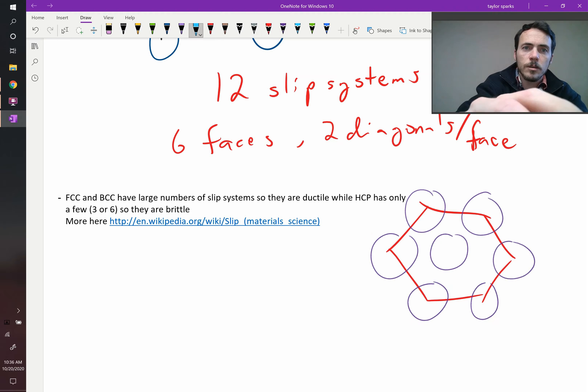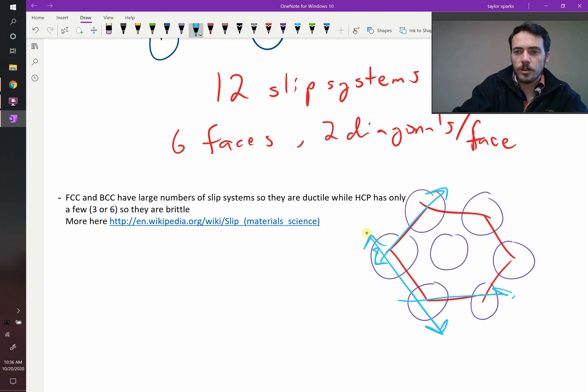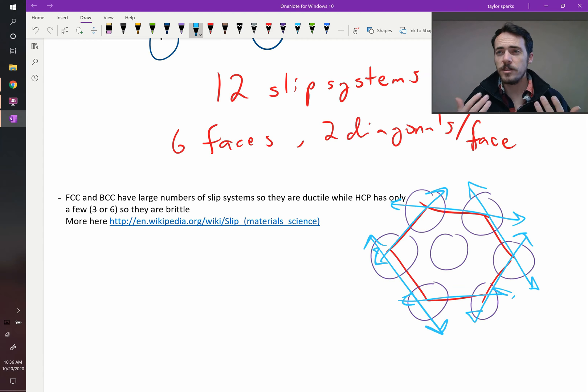You basically get your slip systems in these directions. And since it only has three or six, depending on how you count these, it is fewer slip systems than FCC. Therefore, which one do you think would be more brittle? It's going to be HCP.